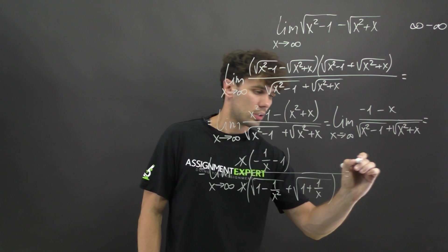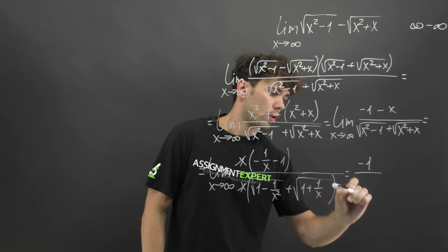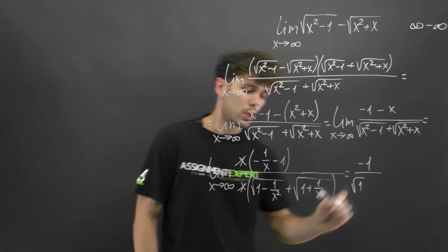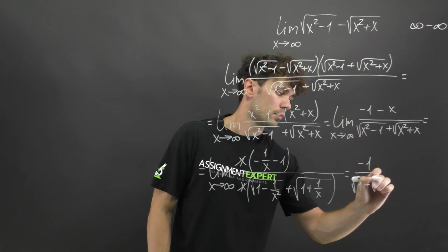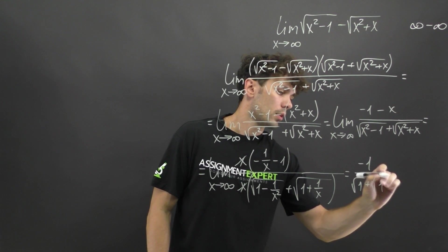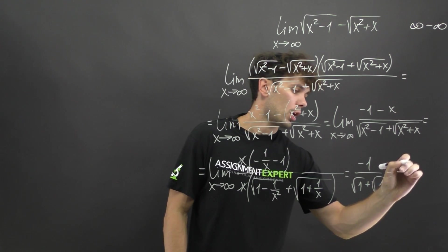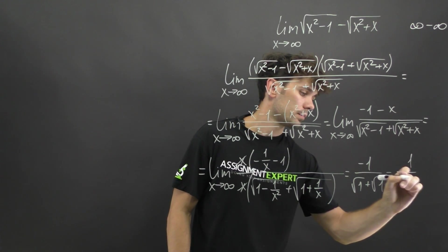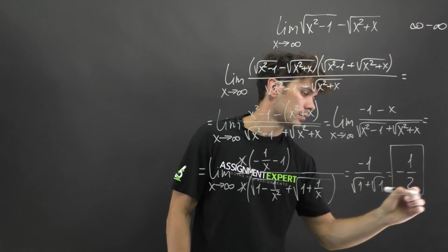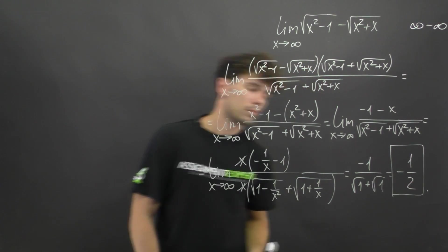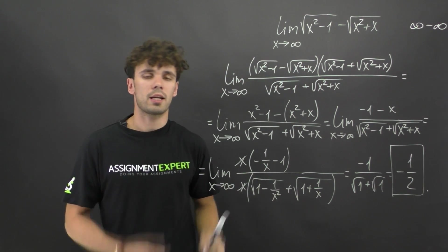We are left with negative 1 over (square root of 1 plus square root of 1), which gives us negative 1 over 2, or negative one half. That's it guys — this is the answer.